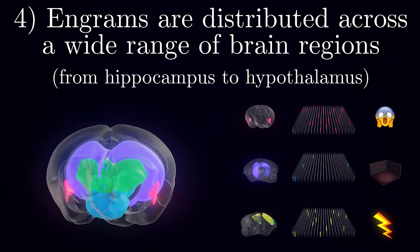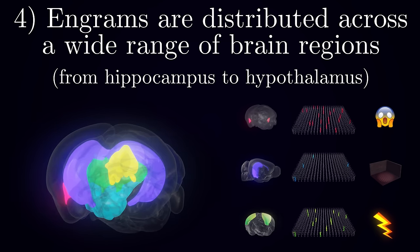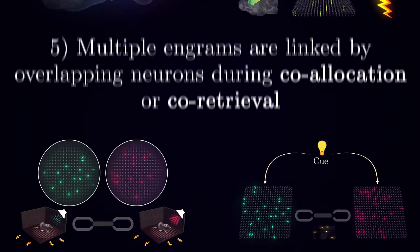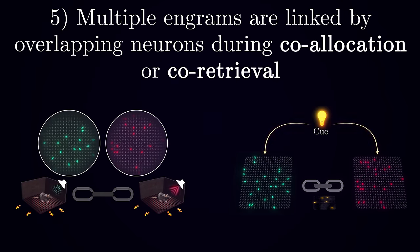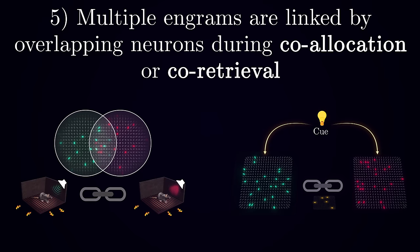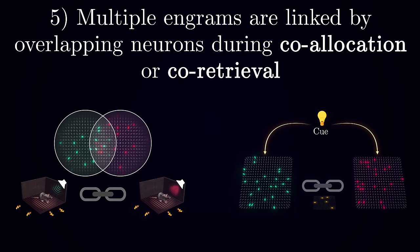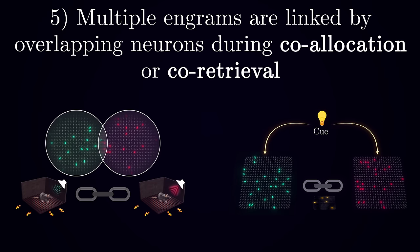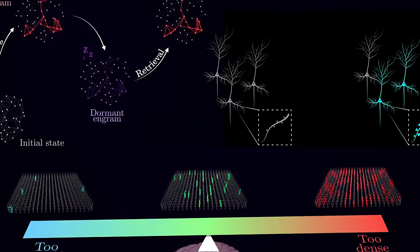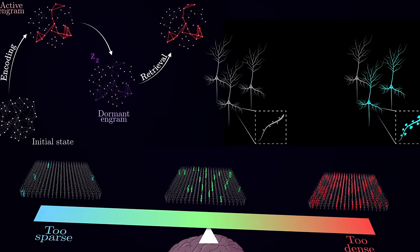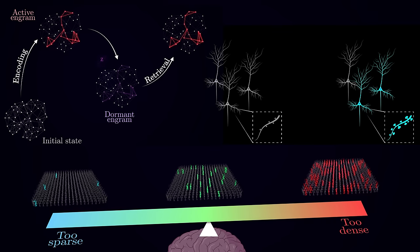Engrams are believed to be scattered throughout the brain, encoding different aspects of each experience like pieces of a puzzle. And multiple engrams can further become linked by sharing some of their neurons. This linkage, applied to a multitude of different individual memories, is likely to underlie abstraction and general principles of learning. Understanding the intricate workings of engrams is crucial not only for unraveling the mysteries of memory, but also for unlocking the potential of our own cognitive abilities.